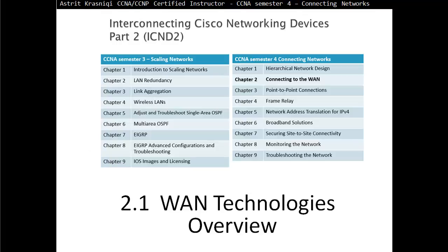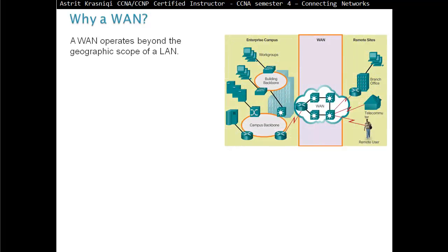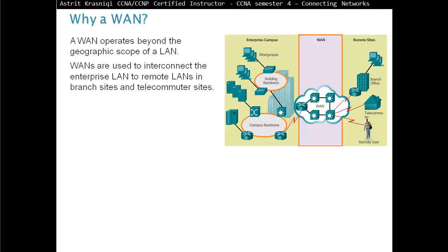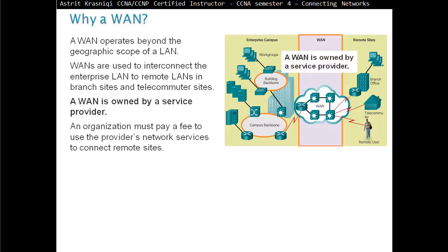Let's start Section 2.1, Wide Area Network Technologies Overview. Why a Wide Area Network? A WAN operates beyond the geographic scope of a LAN. WANs are used to interconnect enterprise LANs to remote LANs in branch sites and telecommuter sites. A WAN is owned by a service provider. An organization must pay a fee to use the provider's network services to connect remote sites.